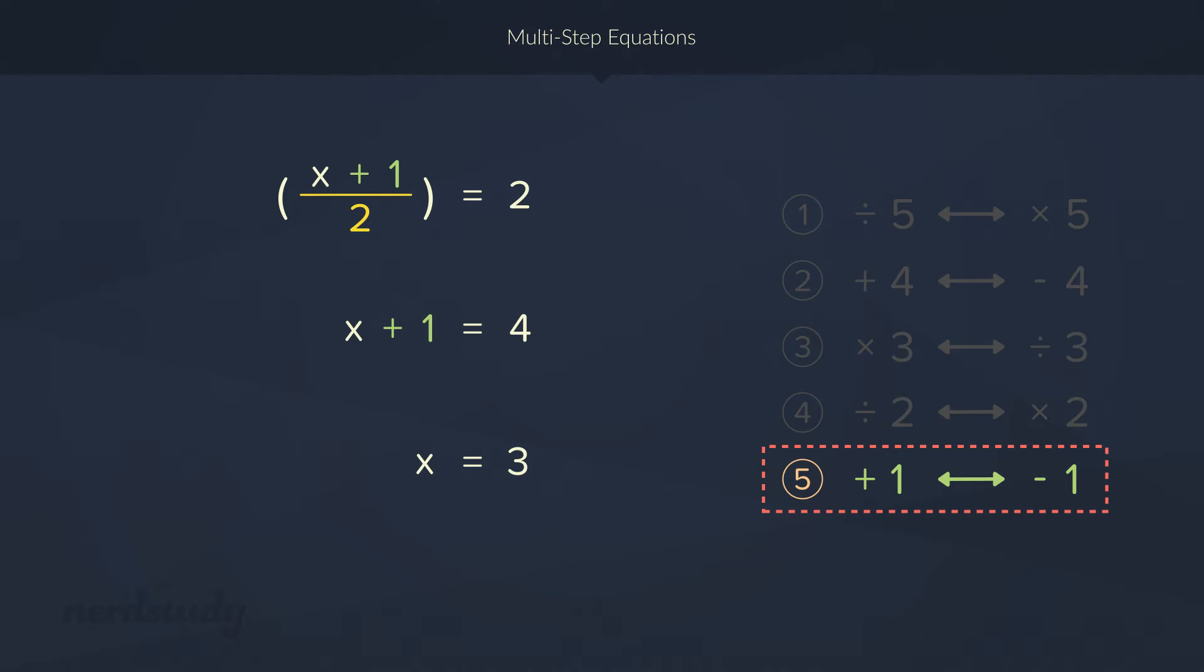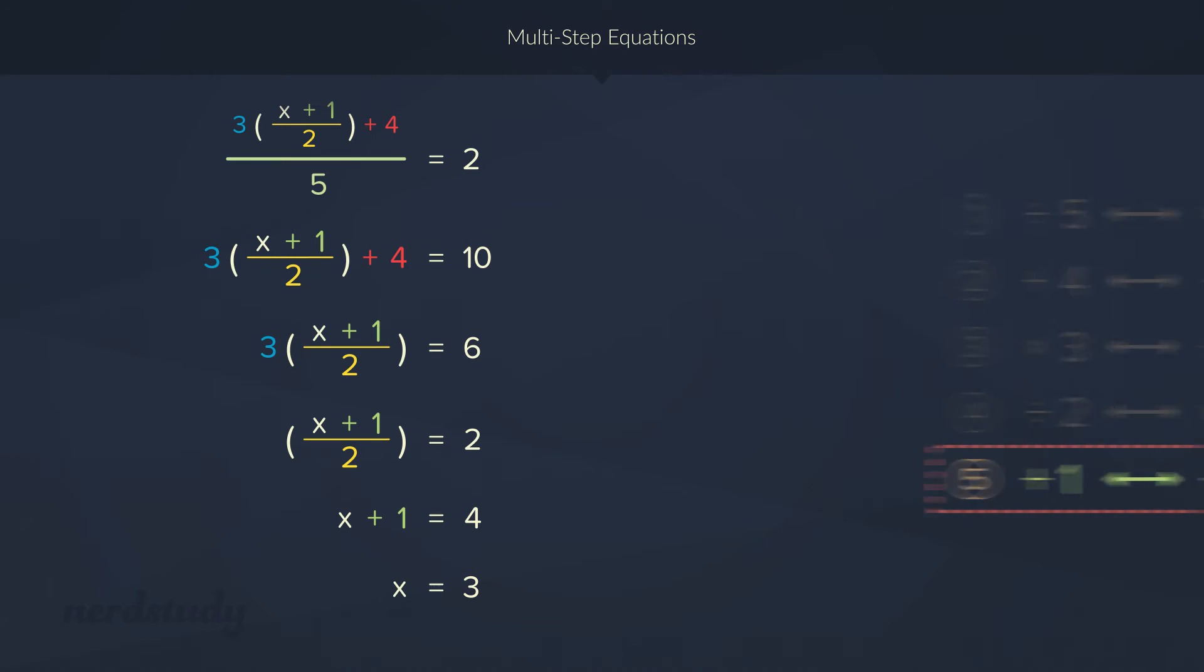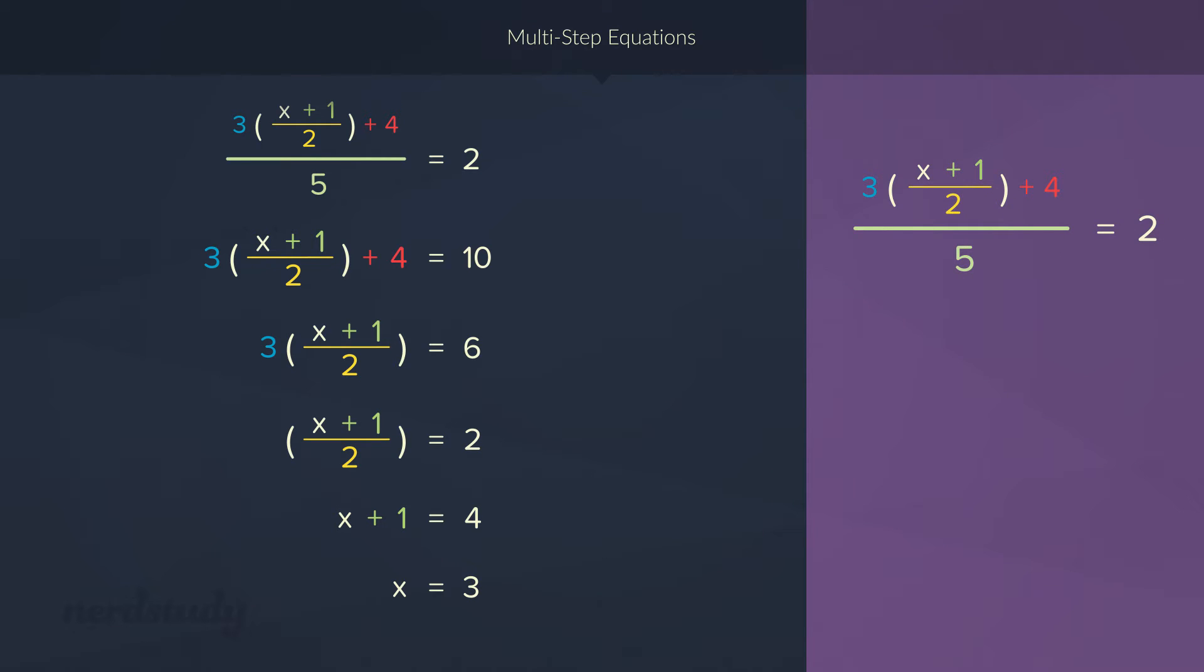So, since this was quite a long one, let's try double checking our answer by doing some scratch work on the side. If we plug in 3 for x, we would get 3 plus 1 which is 4 divided by 2 which is 2. 2 times 3 is 6. 6 plus 4 is 10. 10 divided by 5 is 2 and since 2 equals 2, looks like we got it right.